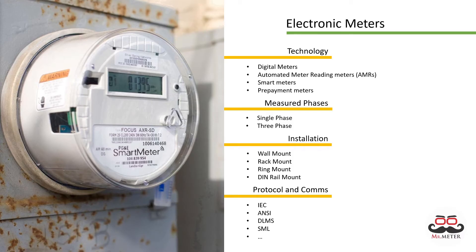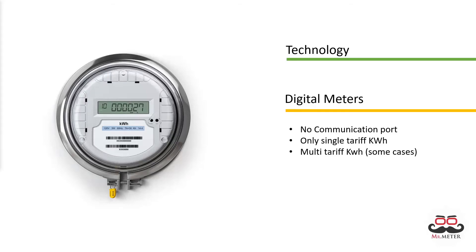Based on technology, the first type is digital meters — roughly the advancement from mechanical meters utilizing electronic technology. They are normally single-tariff meters with no digital communication or data transfer capability, though there are also multi-tariff versions. These meters are the cheapest in the industry and are used in fixed-scope cases, such as fixed-tariff utilities like Economy 7 or Economy 10, or when no digital data collection is necessary and meter readers simply read meters by looking at the LCD screen.